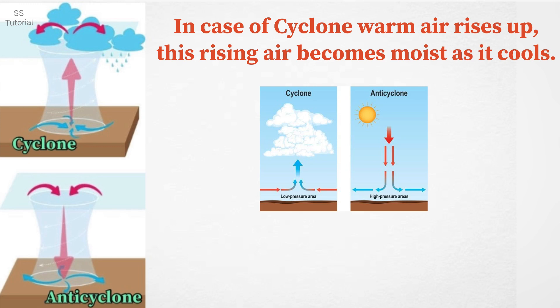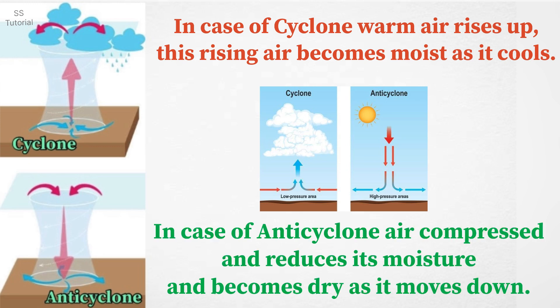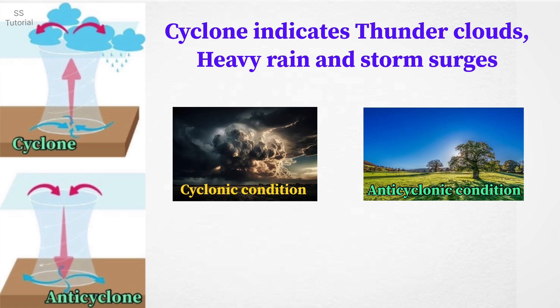In case of cyclone, warm air rises up and this rising air becomes moist as it cools. But in case of anticyclone, air is compressed and reduces its moisture and becomes dry as it moves down.